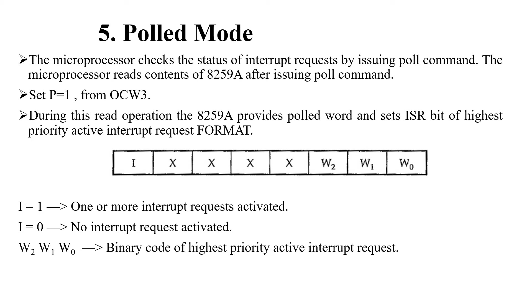When I is equal to 1, it indicates there are one or more interrupt requests. When I is 0, it indicates no interrupt request is raised. W2, W1, W0 — these bits represent the binary code of the highest priority level requesting service.